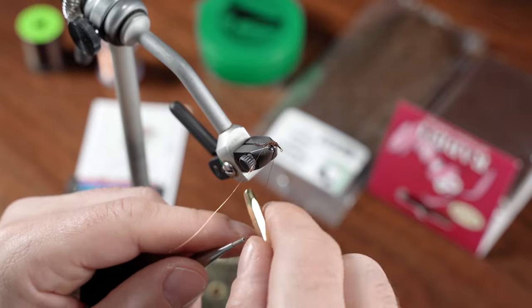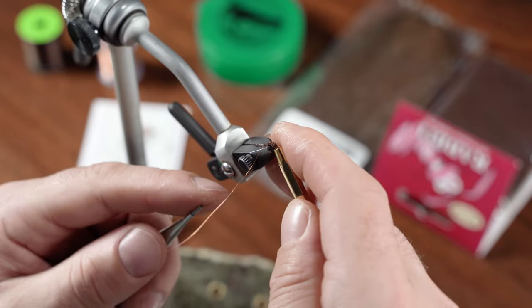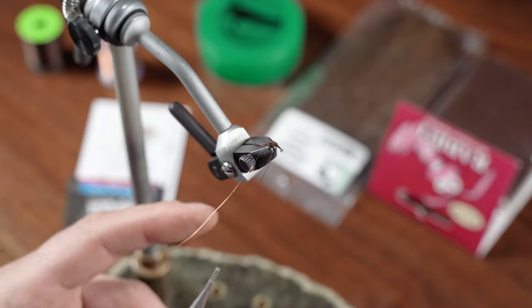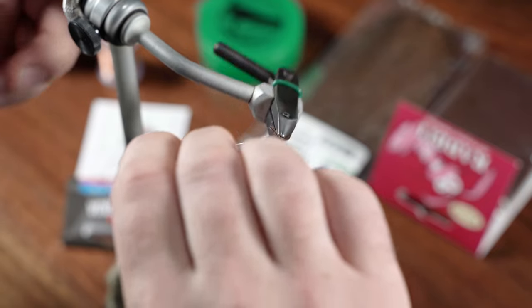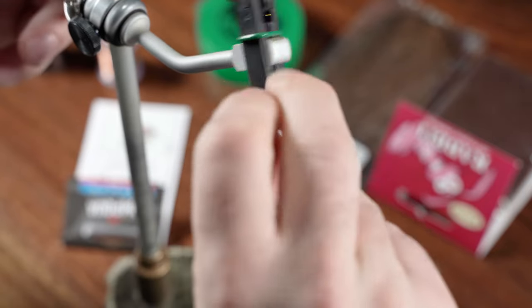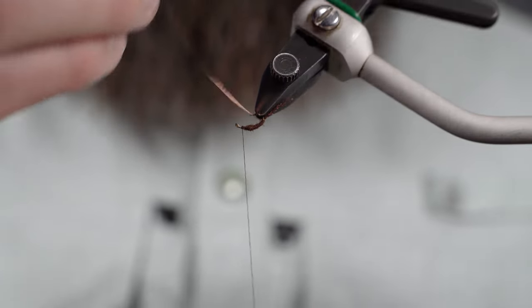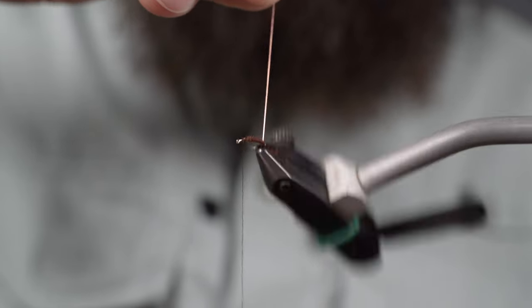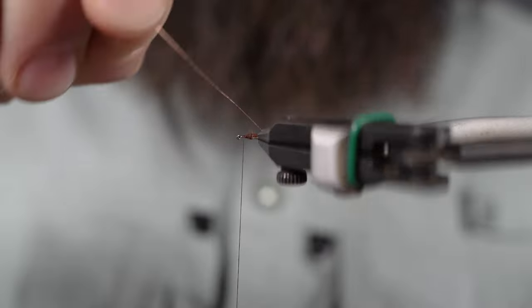Put a little half hitch in that right there. I'm going to actually use my rotary function on my vise to rib this fly.